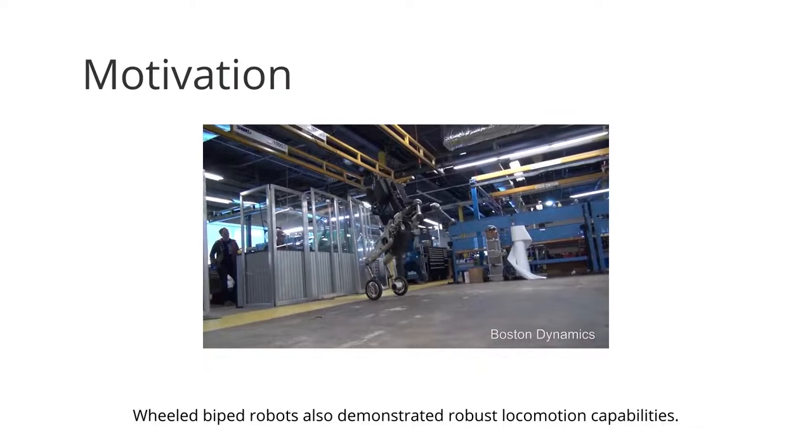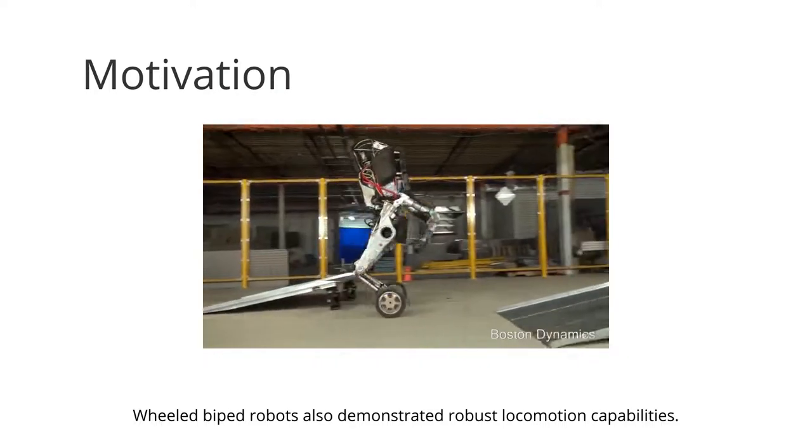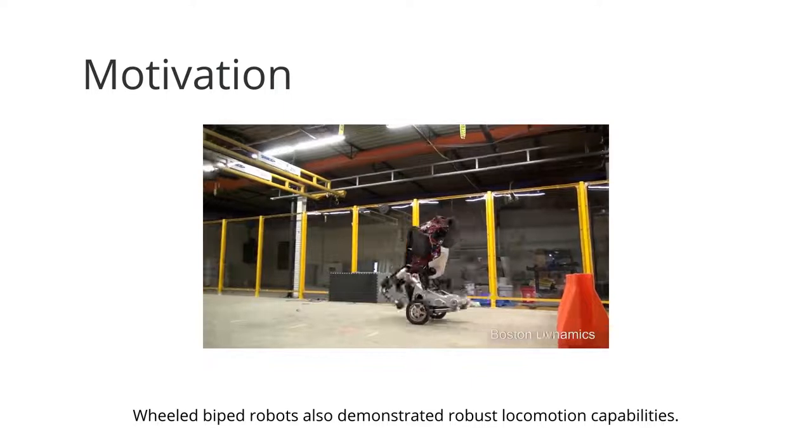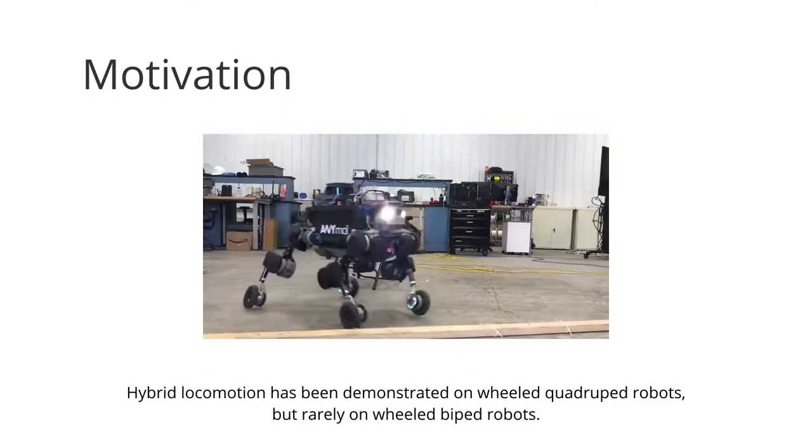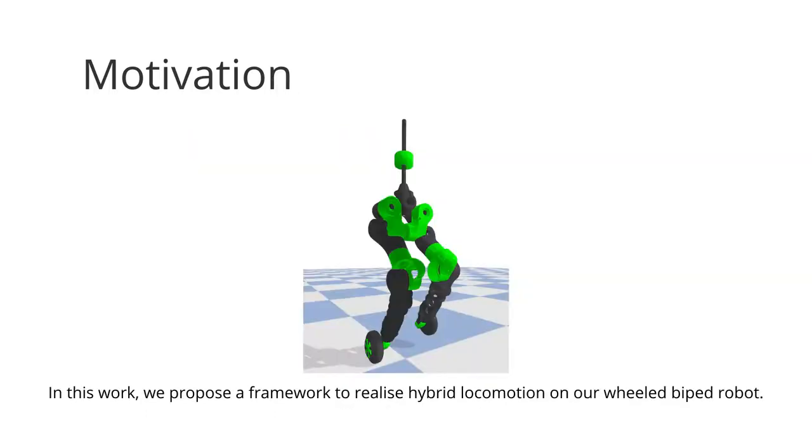including rolling and jumping. Hybrid locomotion has been demonstrated on wheeled quadruped robots, but rarely on wheeled biped robots.